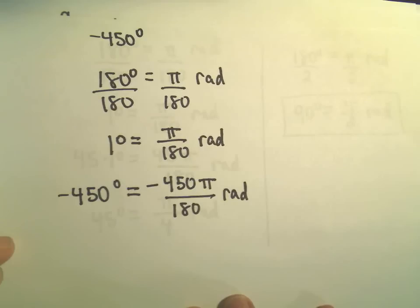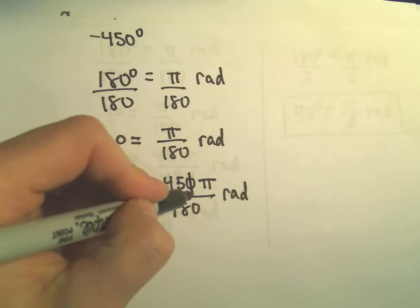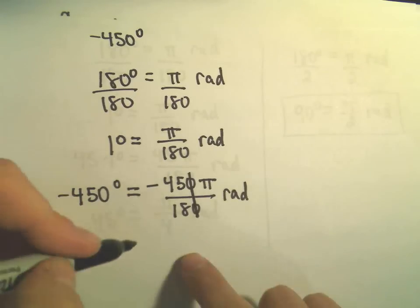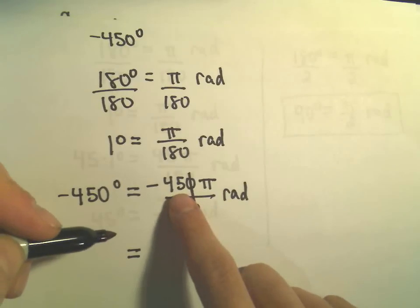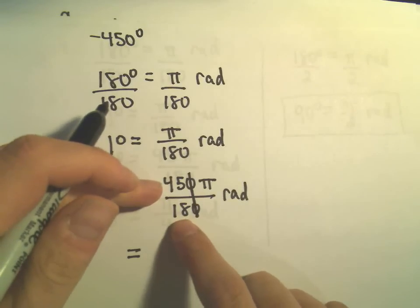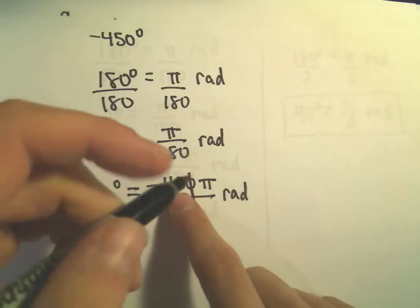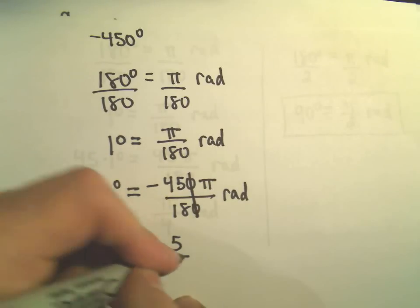And this is the part now that is a little more tedious to simplify. But we can simply cancel out the zeros. Really, we're just dividing top and bottom by 10 is all we're doing. And then what's the largest number that goes into both 45 and 18? Well, I think 9 is the biggest number. So 9 will go into 45 five times.